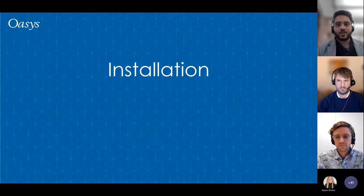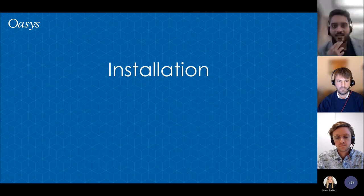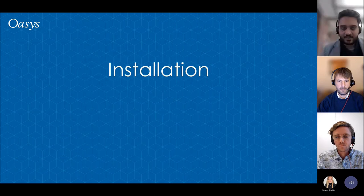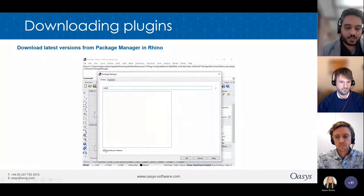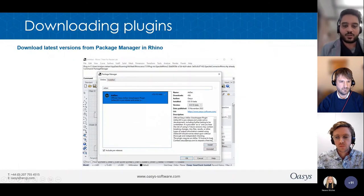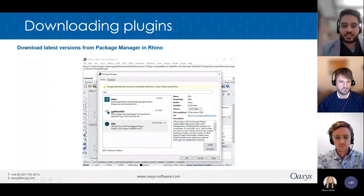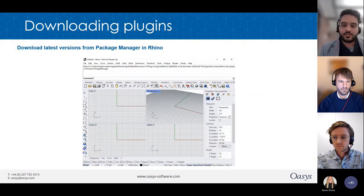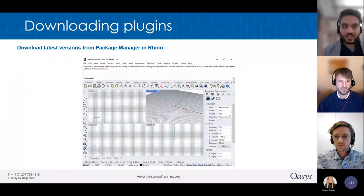As a last note, here's how to install these plugins. Go to the package manager in Rhino, check the box called 'include pre-releases', and search for AdSec or GSA — you'll get the official Oasis plugins. Click install, restart Rhino, and when you open Grasshopper the plugins will be installed.